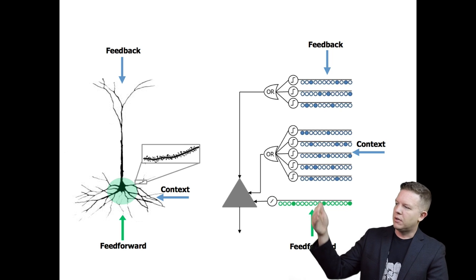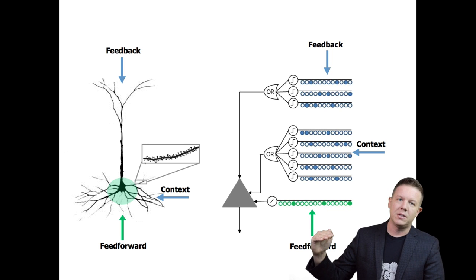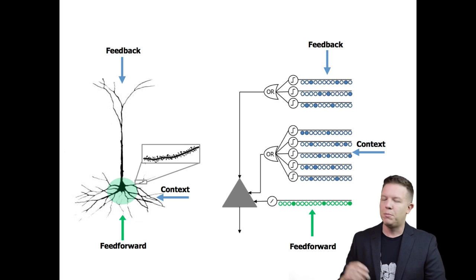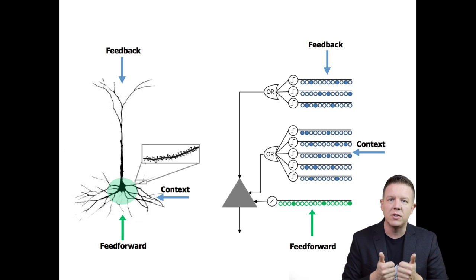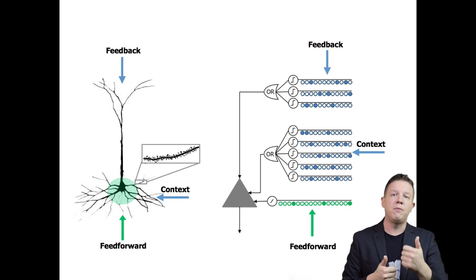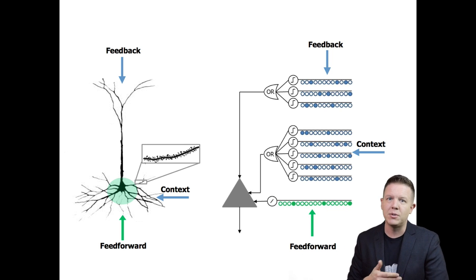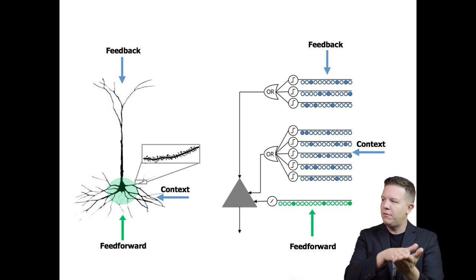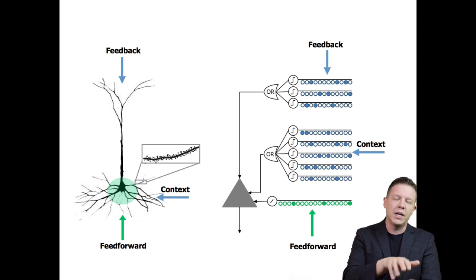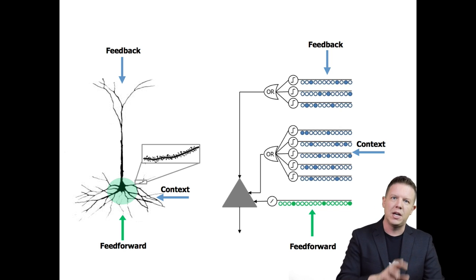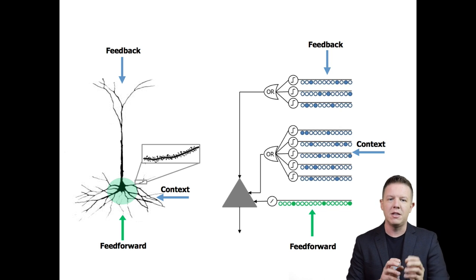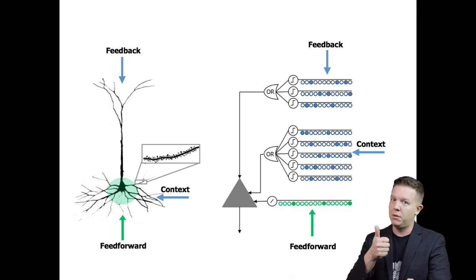Each one of these little coincidence detectors could potentially cause the cell to fire in the next time step if it's right. So all of these segments are like little coincidence detectors telling it, I think I see something in which you're going to play a part next.